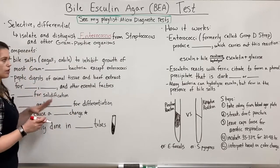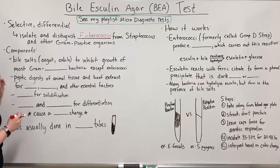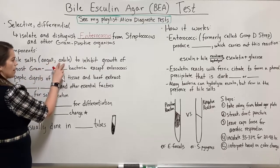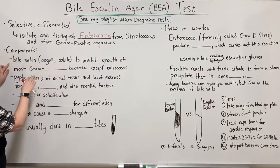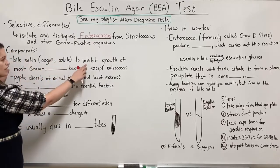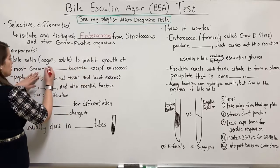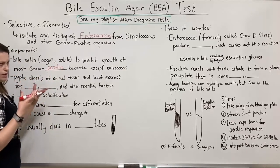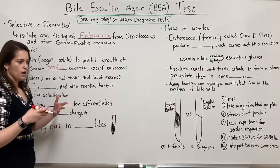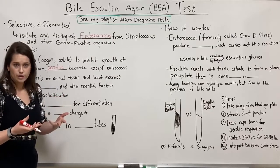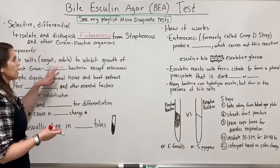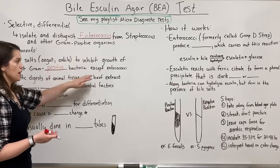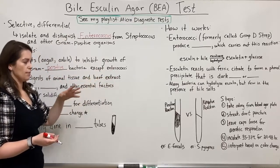So how does it work? It has a few different components. It has bile salts — sometimes referred to as ox gall or ox bile, which are just different words for the same thing. These inhibit the growth of most gram-positive bacteria. So if you have a mixed culture of gram-positive cocci and you're not sure what they are, if you put them on Bile Esculin Agar most of them will be inhibited, except the enterococci and maybe a few strep species.